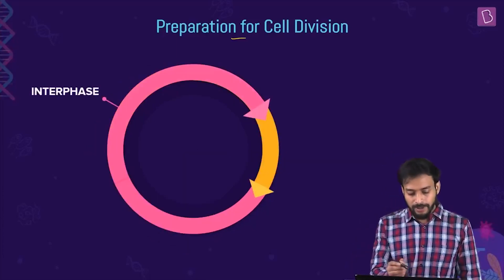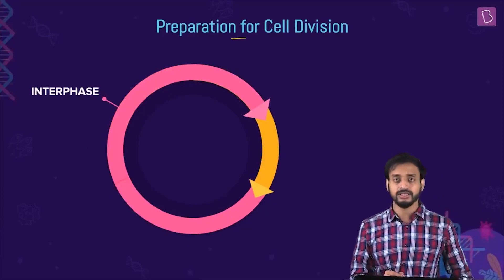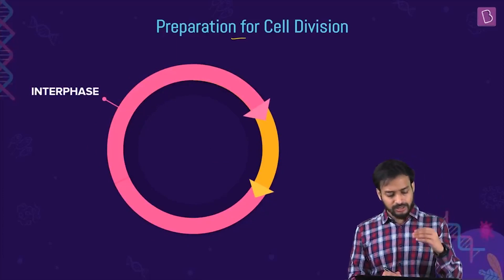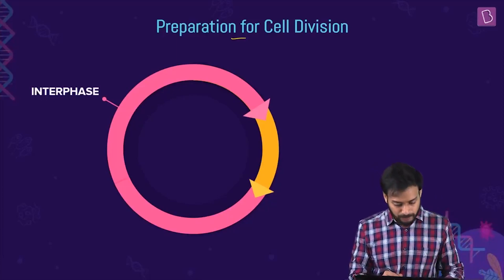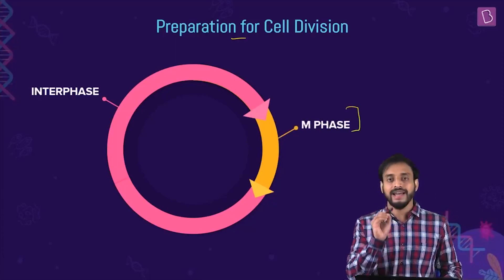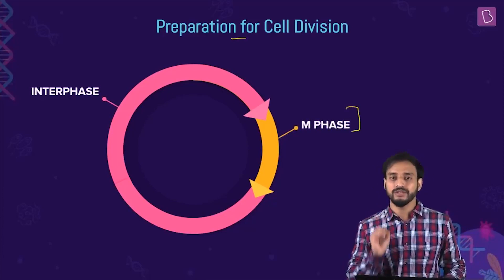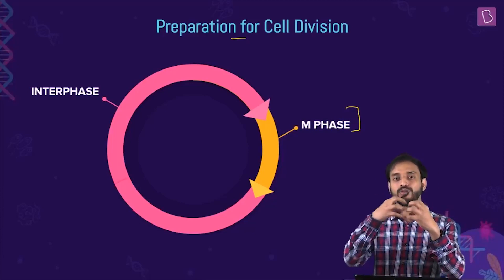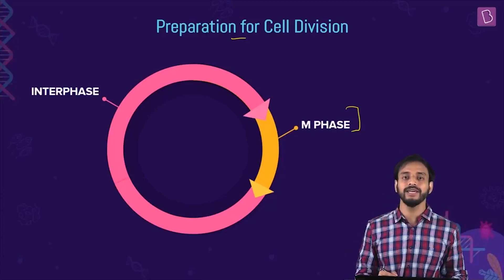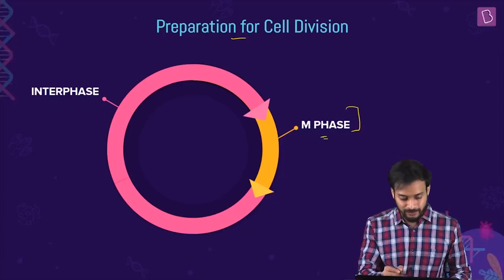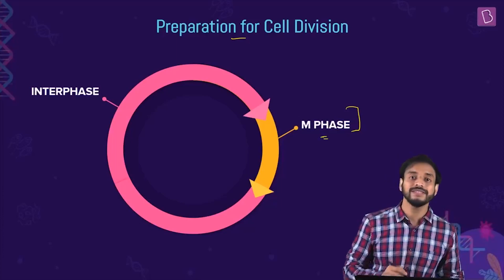The cell cycle is divided into two major phases: interphase and the M phase. The actual division — where one cell forms two cells — happens in the M phase. So what happens in the interphase? Let's talk about that.